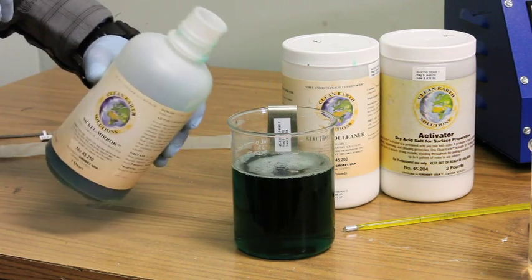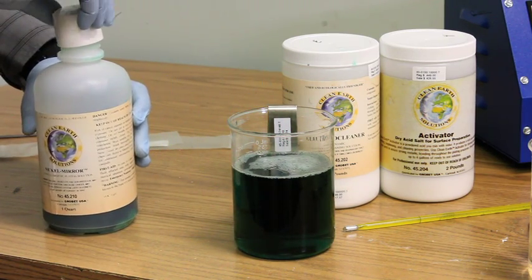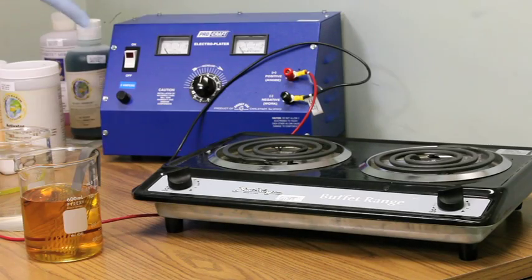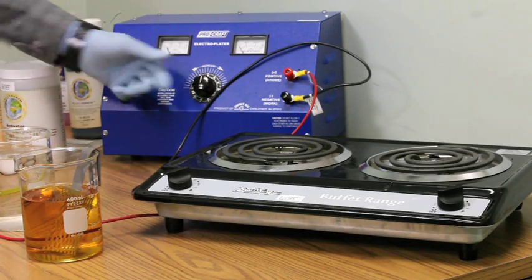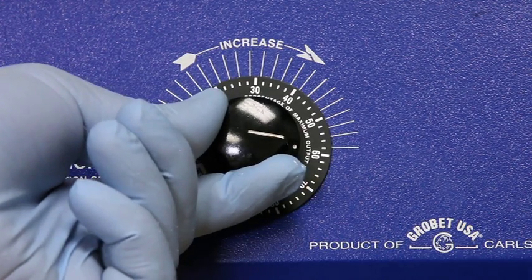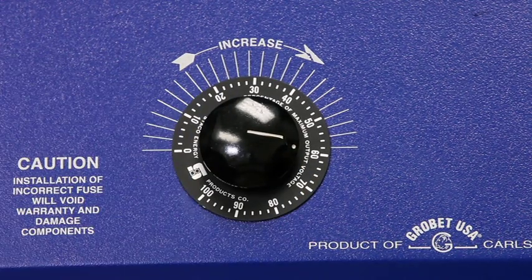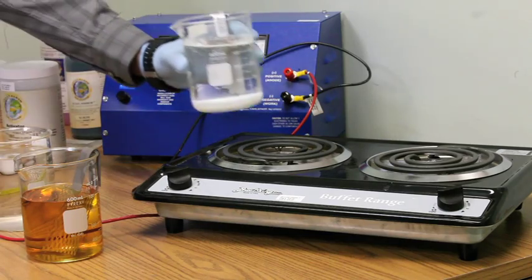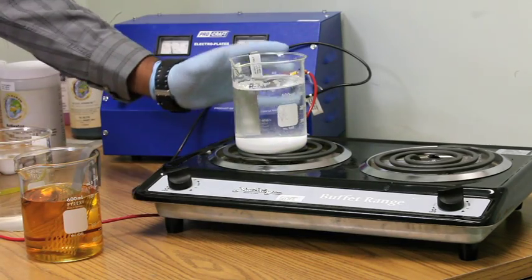Now that the jewelry is clean and the baths are ready, you can begin plating. Set the rectifier to 6 volts and heat the electro cleaner and rhodium solutions to 100 degrees.